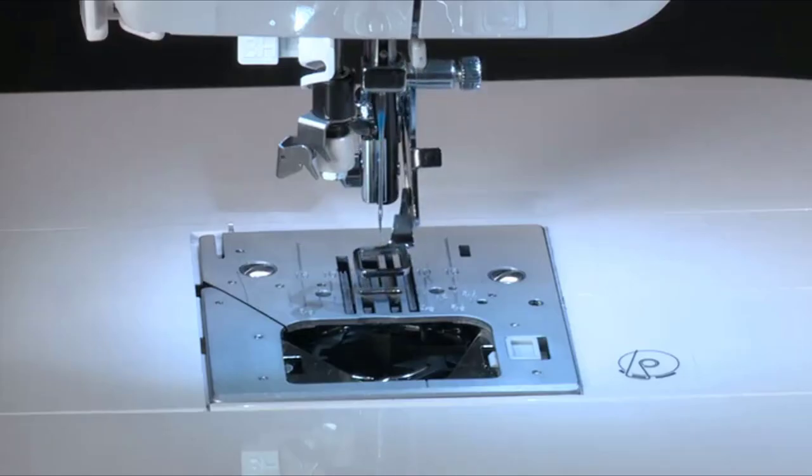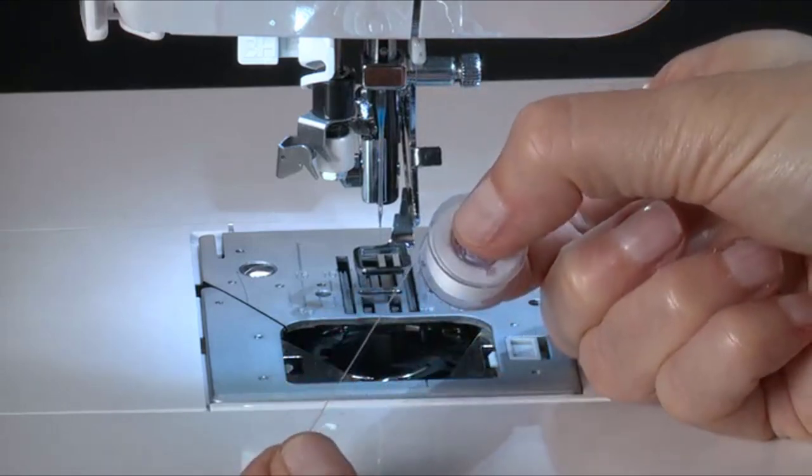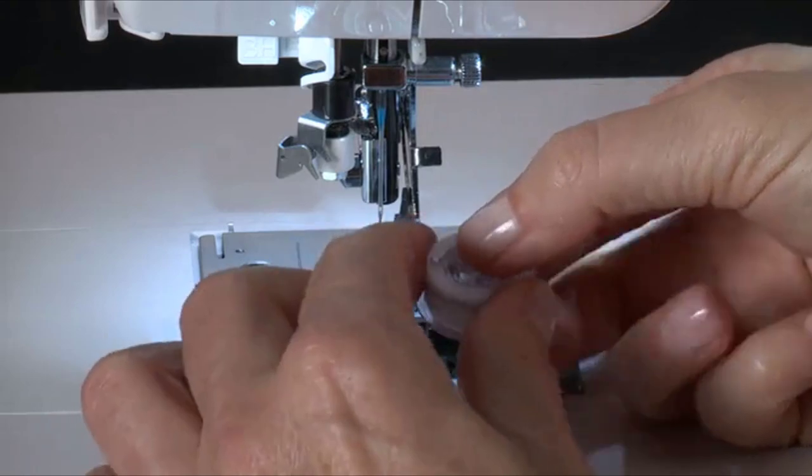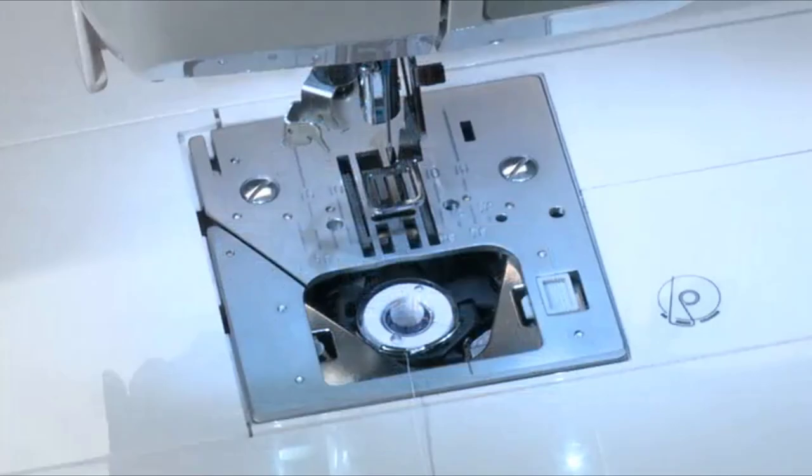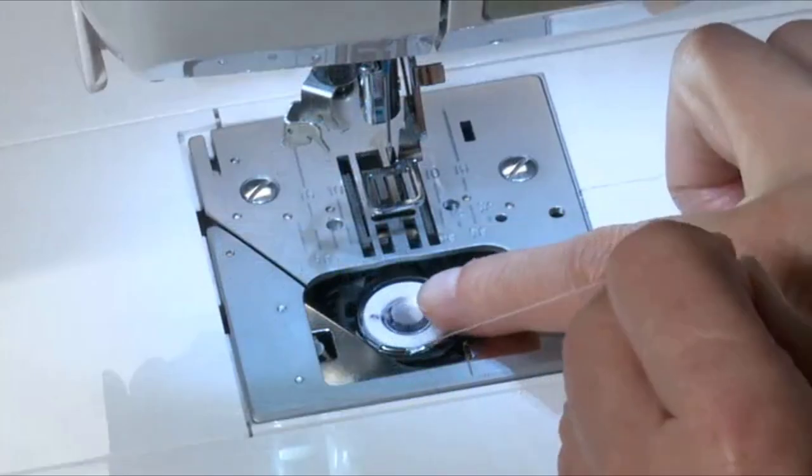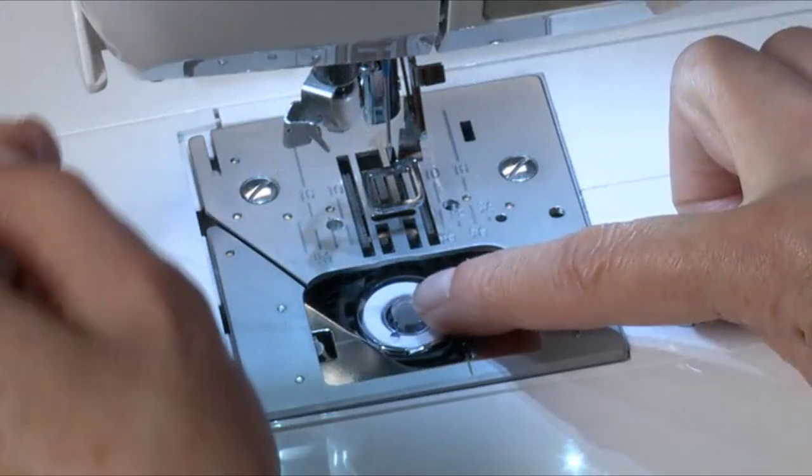To insert the bobbin, raise the needle to its highest position by turning the handwheel counterclockwise. Place the bobbin into the bobbin case, then pull the thread to check that the bobbin turns counterclockwise. Pull the thread first into this groove, and then to the left.